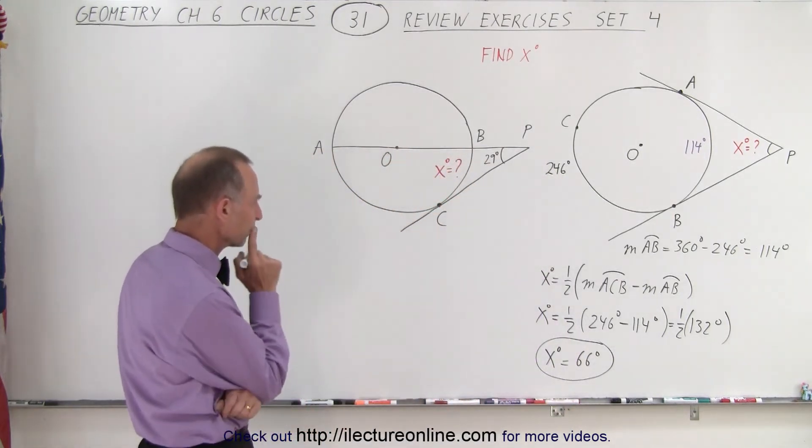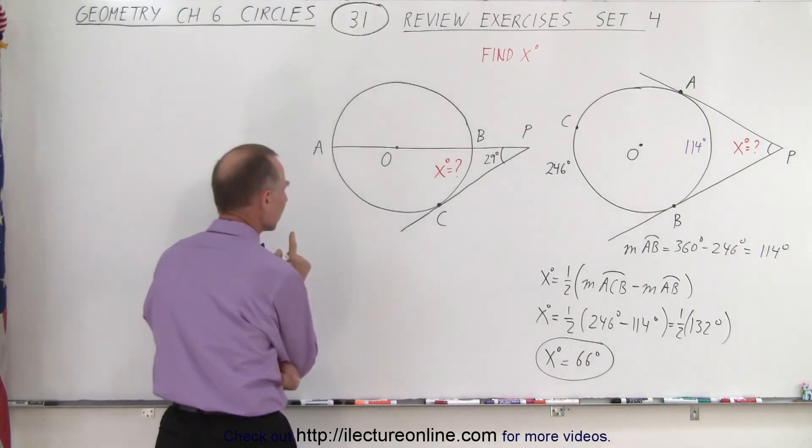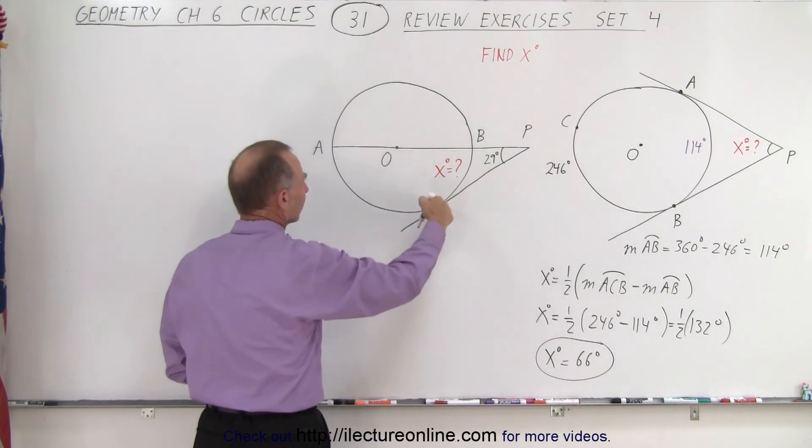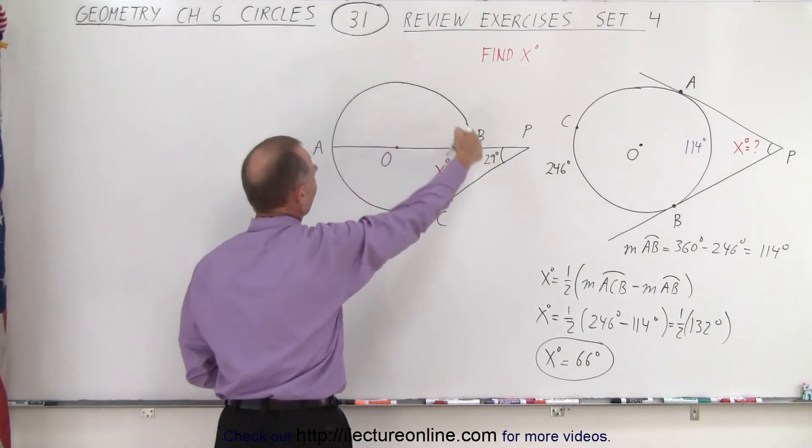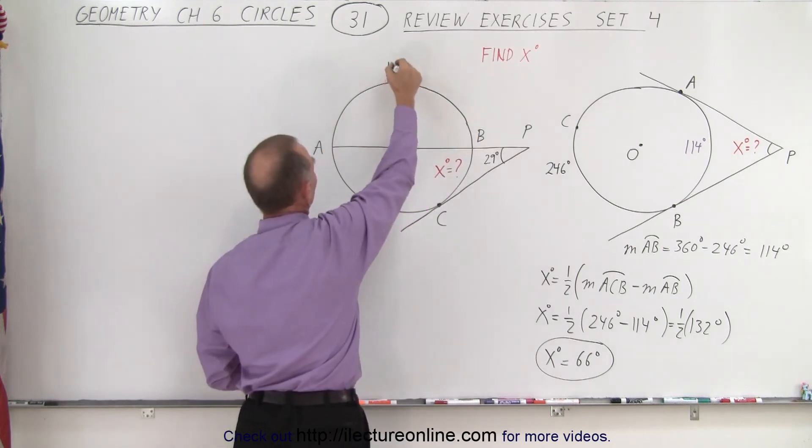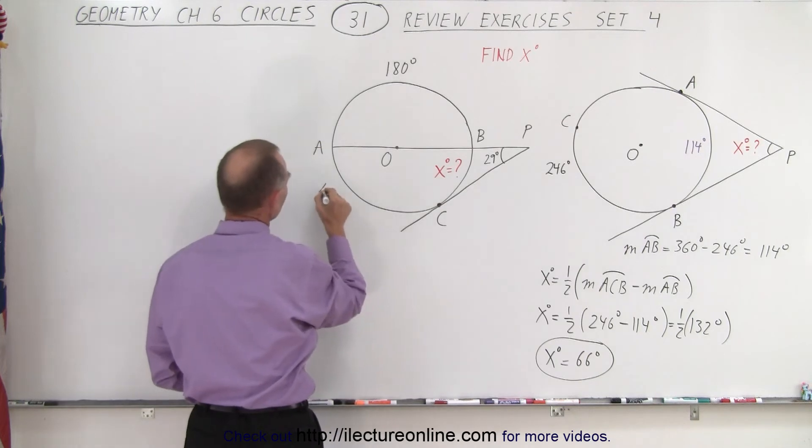How about the one over here? Alright, what we can say here is that this is x degrees. This makes, that's the diameter of the circle, so that's a semi-circle right here. That means that this is 180 degrees.